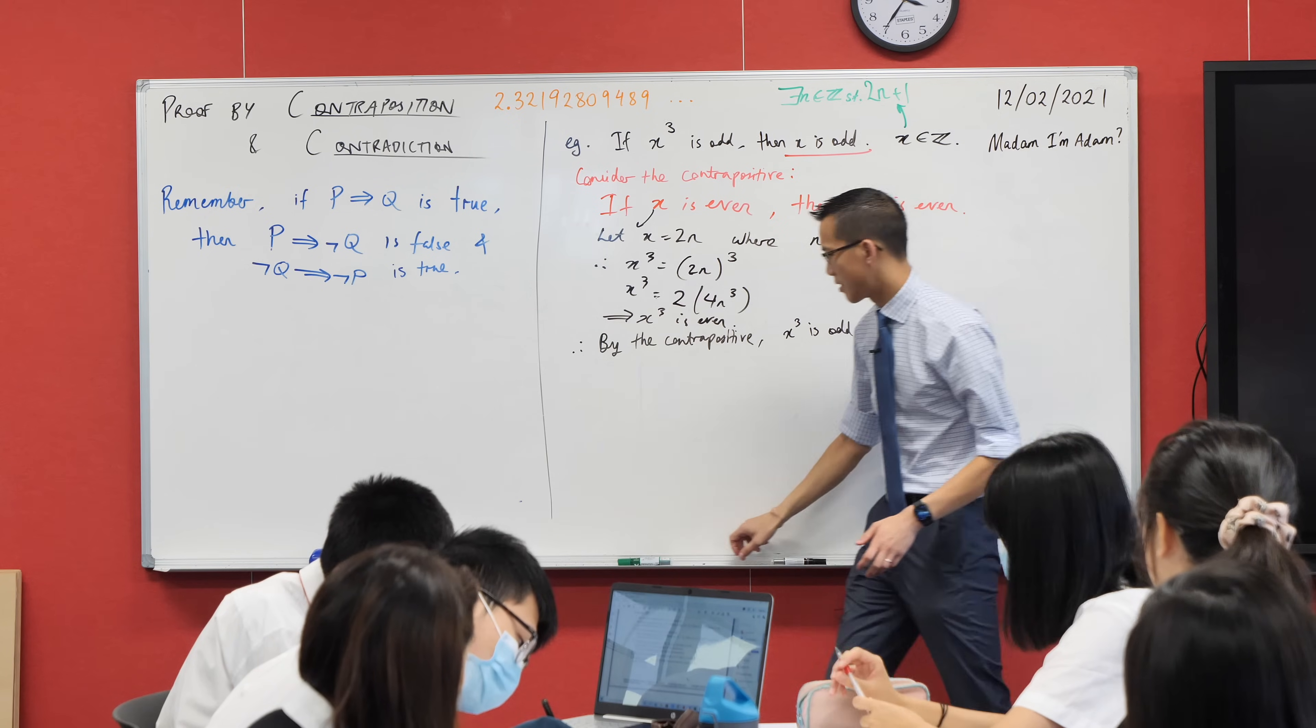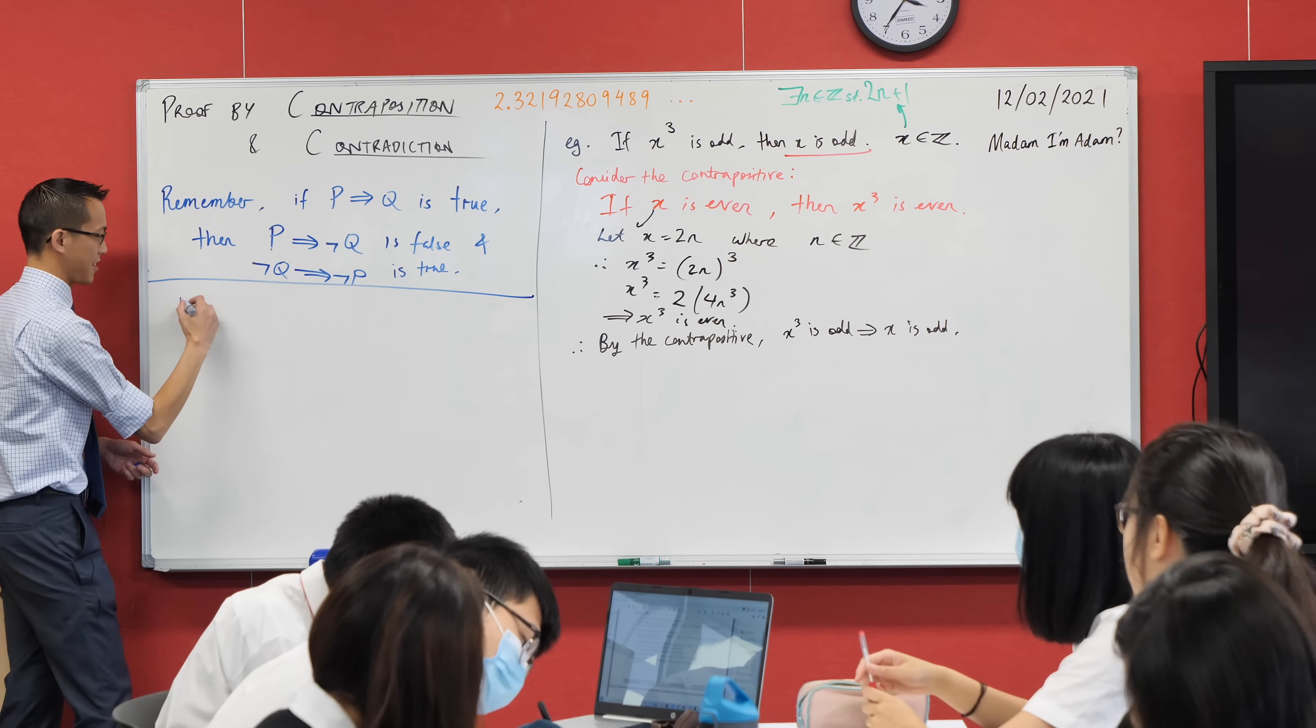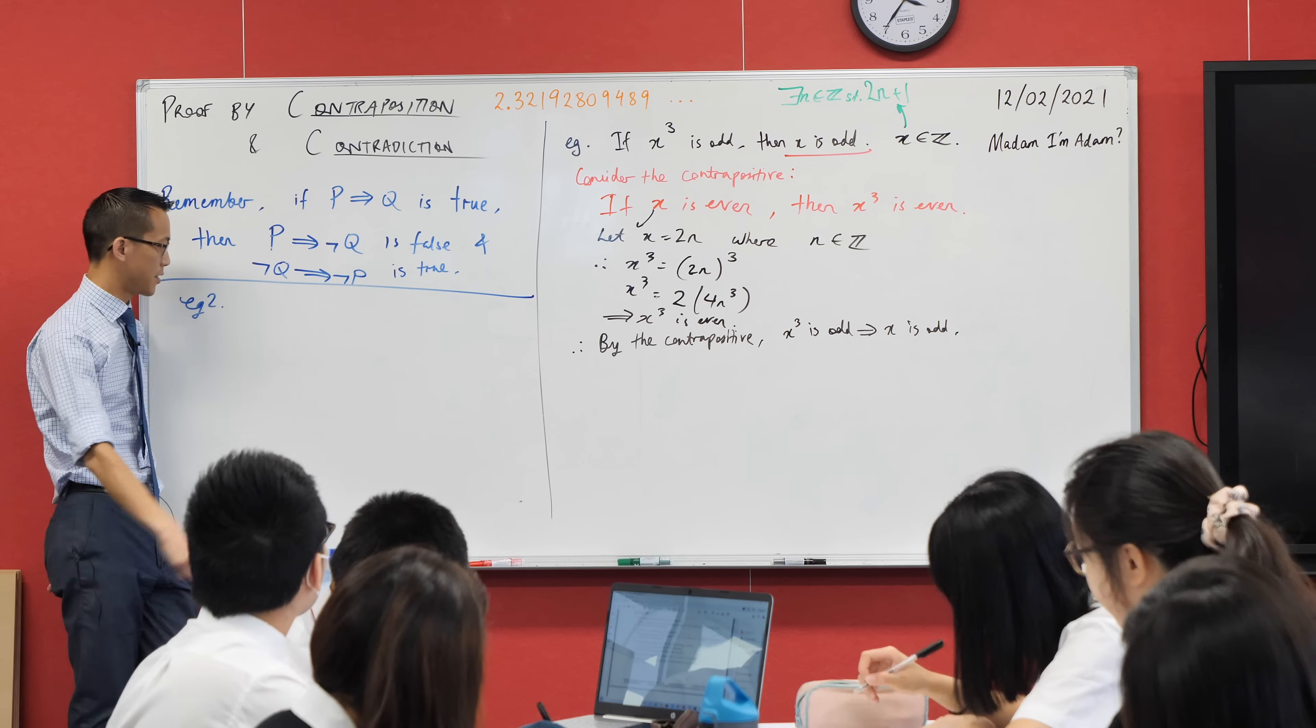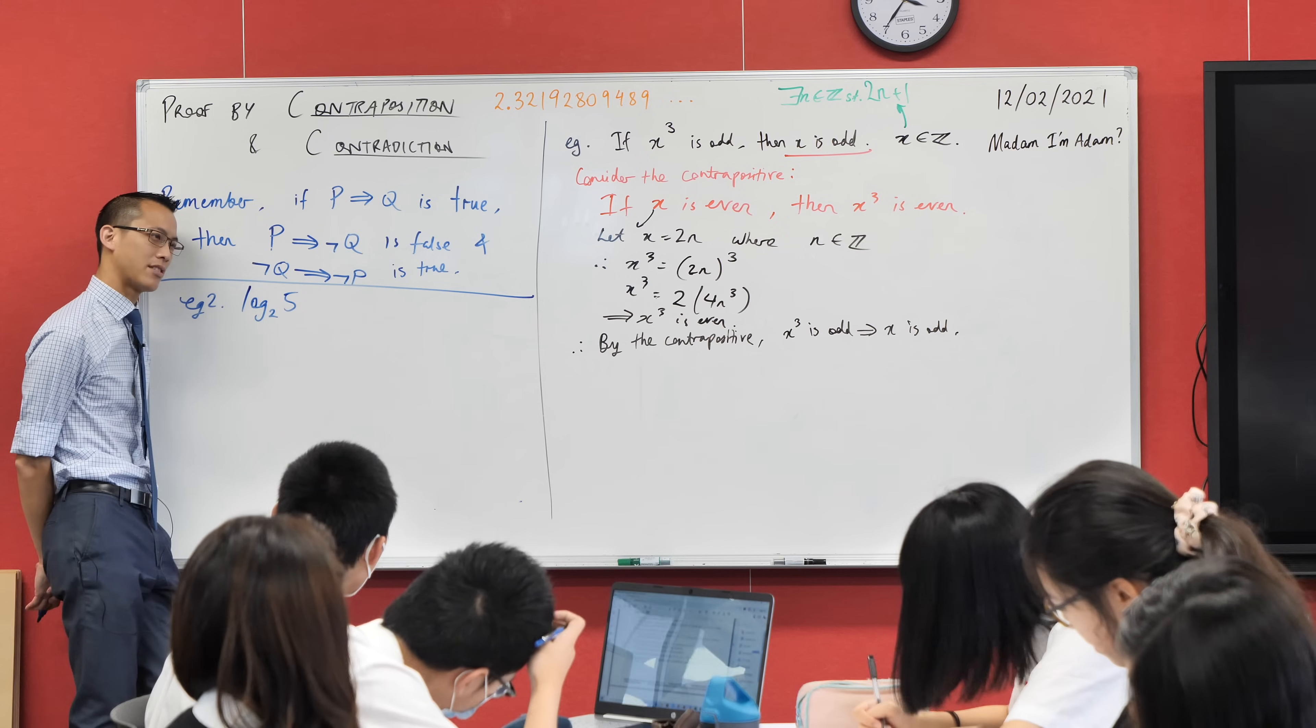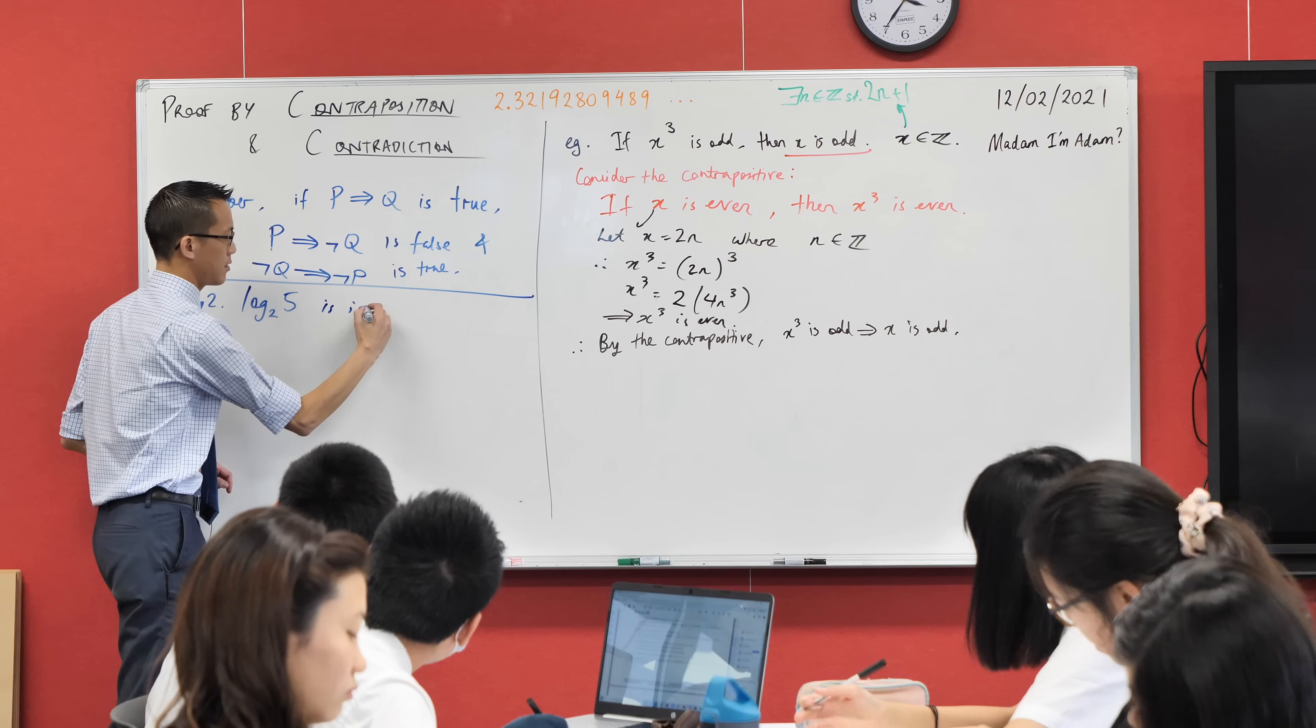So let's do another classic example. It's so classic, it's literally like word for word in the syllabus. We want to prove that log base 2 of 5, and you could have picked a whole bunch of different numbers, but this is kind of like a classic one. Prove that this is irrational.